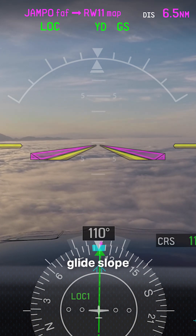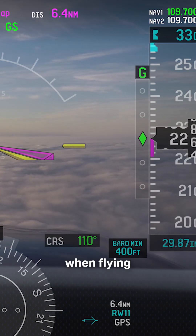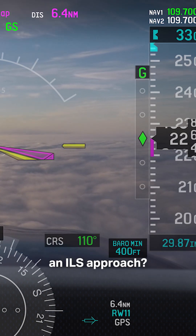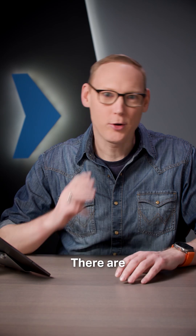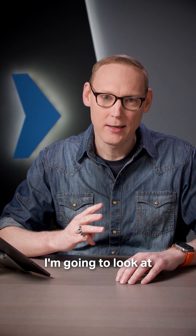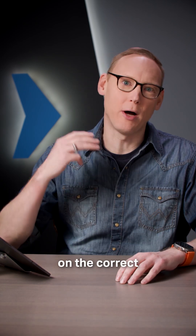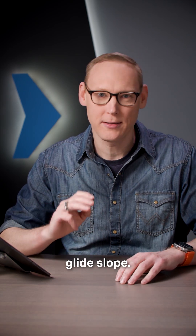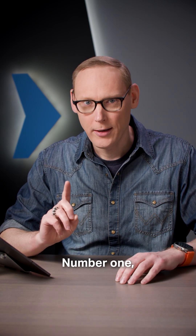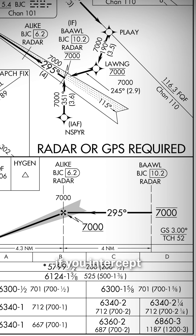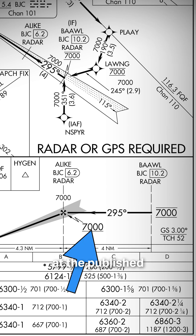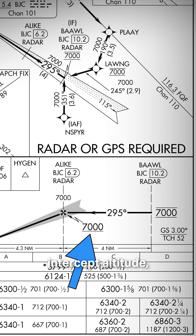How do you know if you're on a false glide slope when flying an ILS approach? There are three things I'm going to look at to make sure I'm on the correct glide slope. Number one: if you intercept the glide slope from below at the published minimum intercept altitude, then you'll be on the correct glide slope.